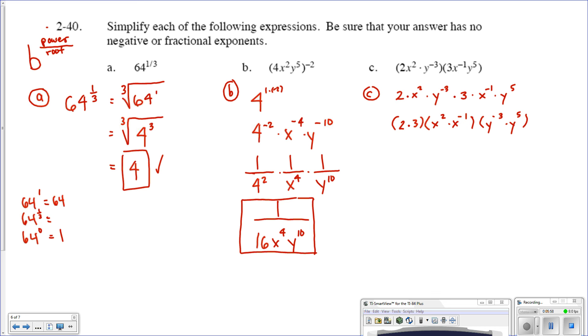So 2 times 3 is going to give me 6. x squared times x to the negative first is like saying x to the 2 plus negative 1, which would give you x to the first power. So we have x times negative 3 plus 5. This is like saying y to the negative 3 plus 5, which gives you y squared.